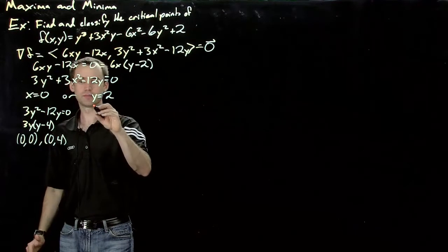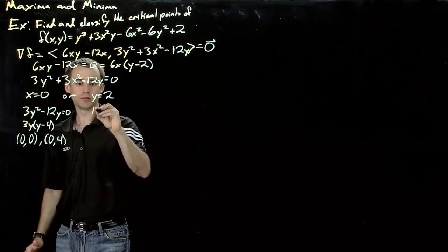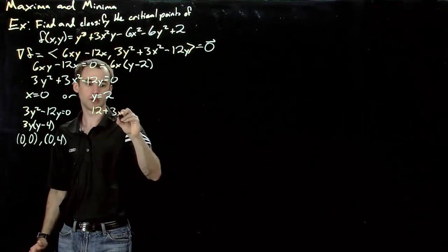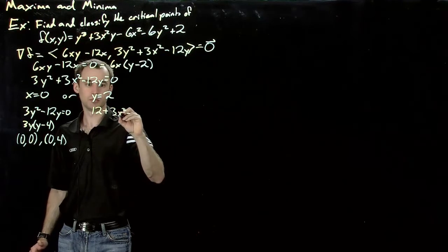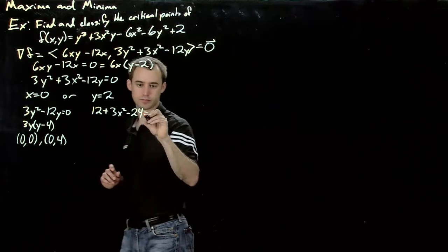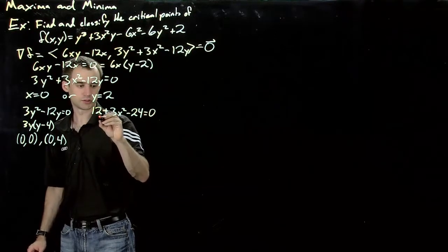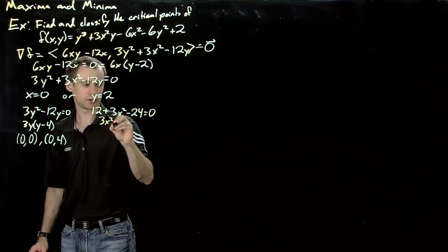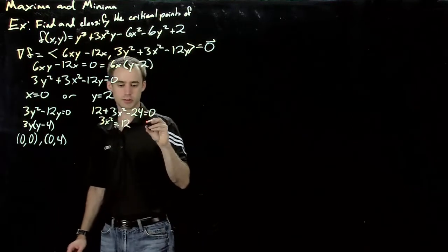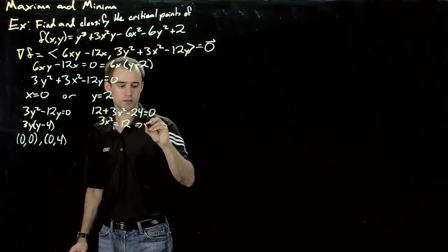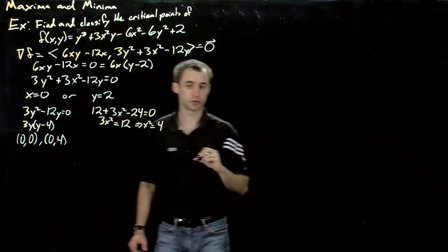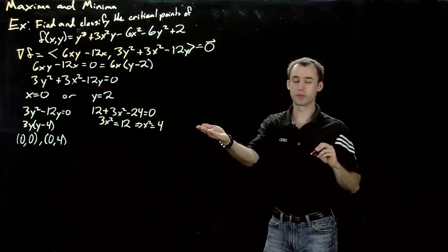In this case, the second equation becomes 12 plus 3x squared minus 24 equals 0. Or in other words, 3x squared is equal to 12. And this is equivalent to x squared equals 4.